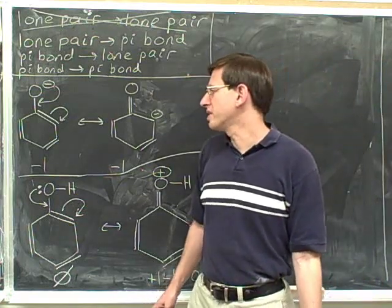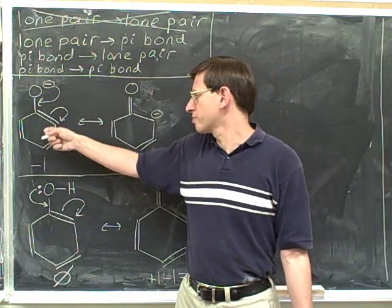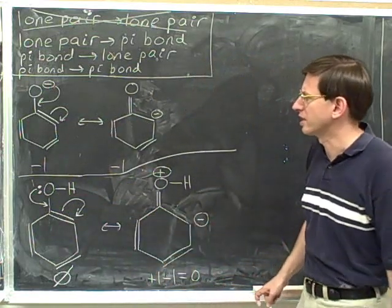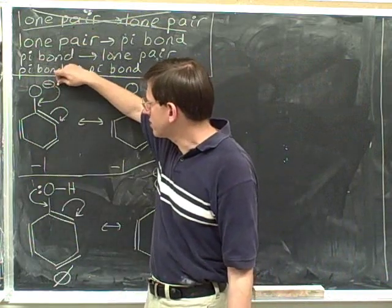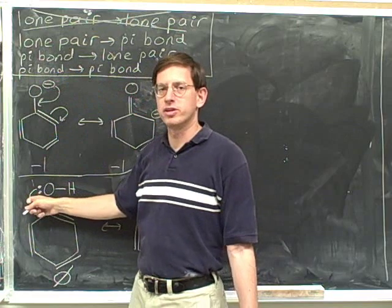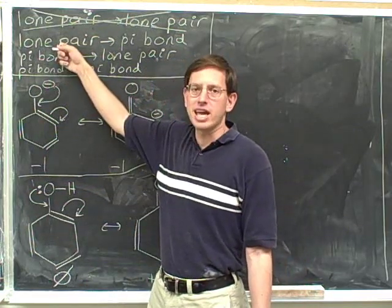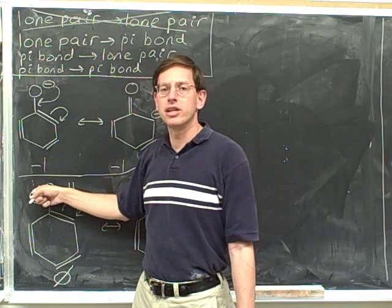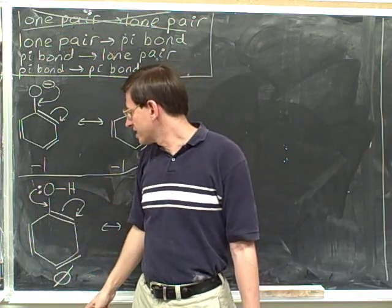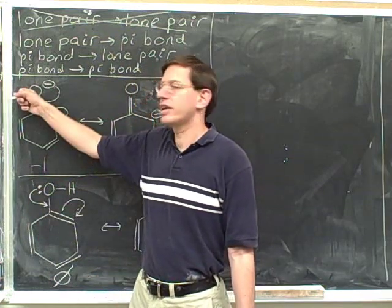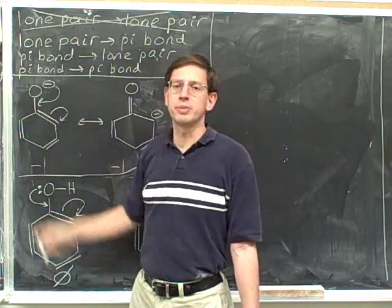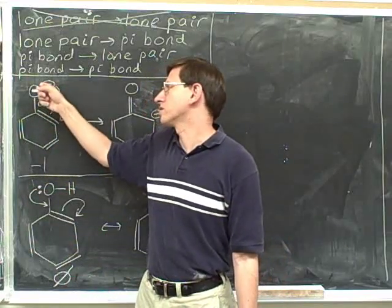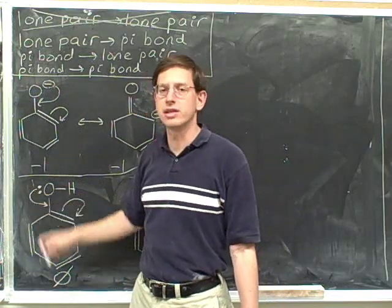I've left some of our previous example on the board — here are some of the resonance structures from that example. I wanted to compare it with this one. Notice that both arrows are going from a lone pair to a pi bond, but there are two different ways to indicate that. If the atom is neutral, you have to draw in the lone pair. If the atom has a negative formal charge, there's no need to draw the lone pair — you just show the tail coming from the negative charge. That's the convention: if there's a charge, we use the charge as a stand-in for the lone pair.